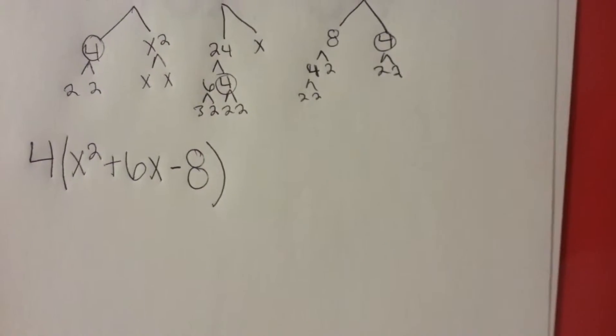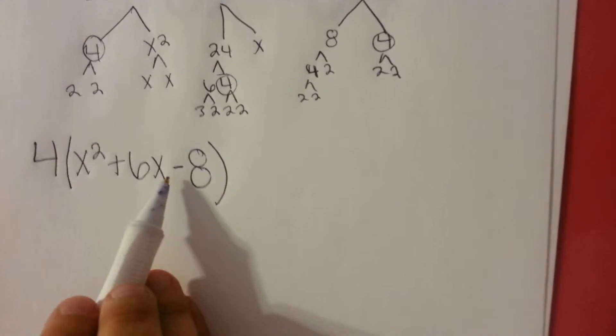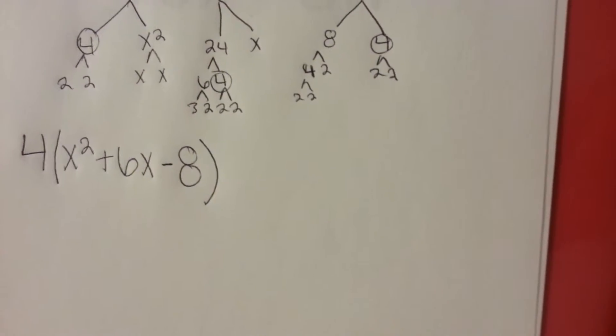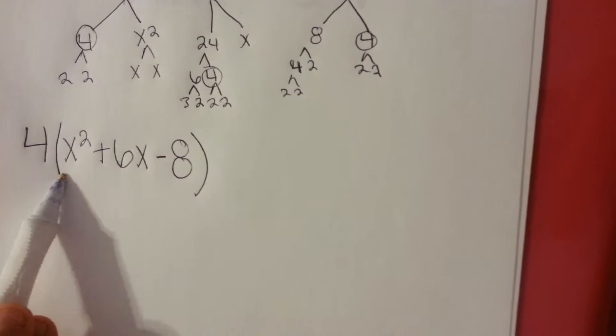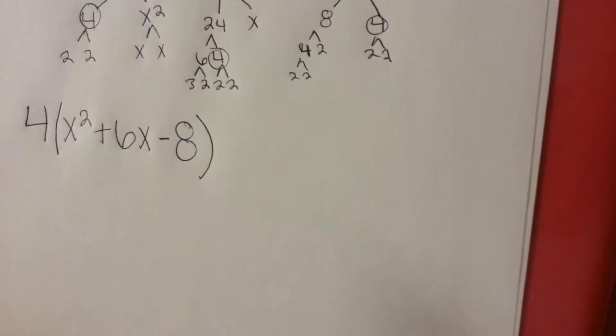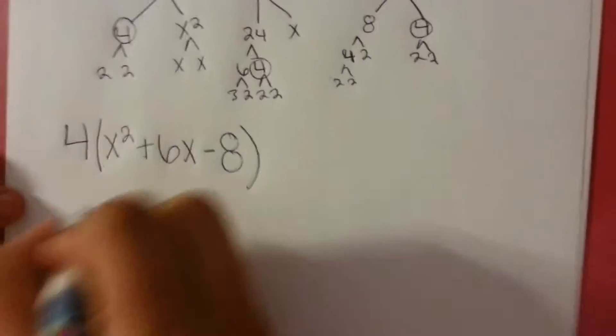and parenthesis is going to be x squared plus 6x minus 8. Now I can factor just this with the 4 on the outside way easier. And you'll get...